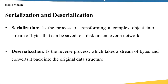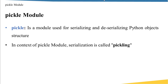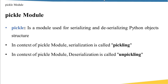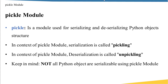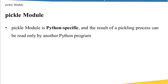Deserialization is the reverse process — it takes a stream of bytes and converts it back into the original data structure so you can use it again in your program. The pickle module is used for serializing and deserializing Python object structures. In the context of pickle, serialization is called pickling and deserialization is called un-pickling. Also note that not all Python objects are serializable using the pickle module, so you may encounter errors for that reason.